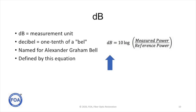The way we're going to understand it is to break it down into each of the parts of the equation. dB is the measurement unit. It's called a decibel, and that means one-tenth of a bell. The bell was the sound unit, measurement unit, named for Alexander Graham Bell. And it was defined by this equation. dB equals 10 times the log of measured power over reference power.